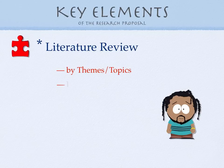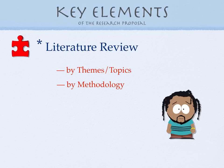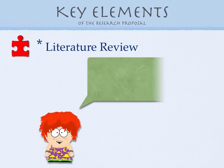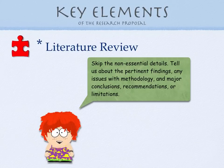But if the method is an important factor, you could also organize your research that way — you might have three studies that used the same method but got different results, and then other studies that used different methods with a significant impact on the findings. The last approach is best for historical research where you want to show a progression or evolution in the phenomenon or the research; then you can organize it chronologically. As you compose this part of your proposal, don't try to list every detail of each study. Skip the nonessential details. Tell us about the pertinent findings, any issues with the methodology, and the major conclusions, recommendations, or limitations.